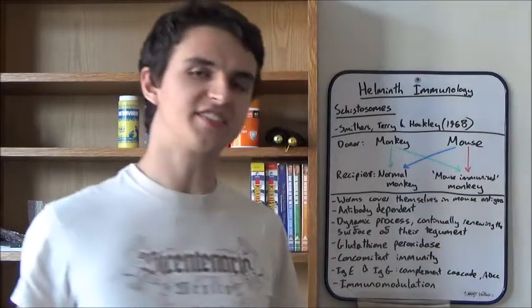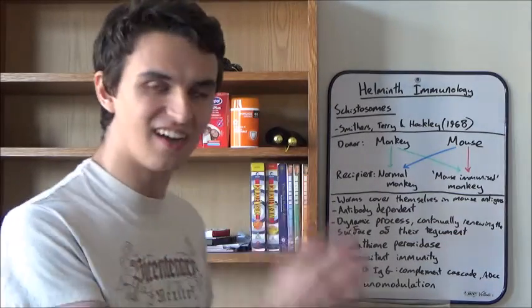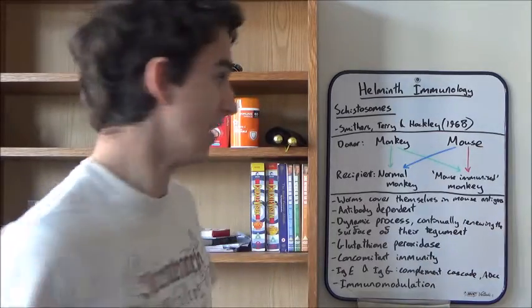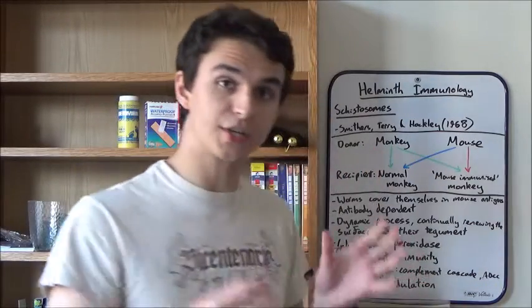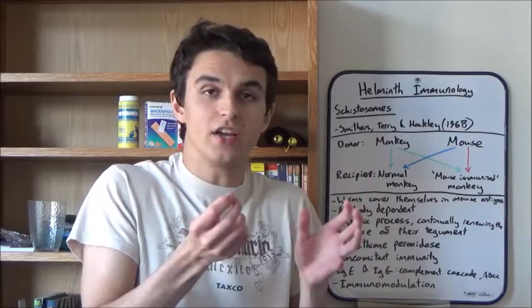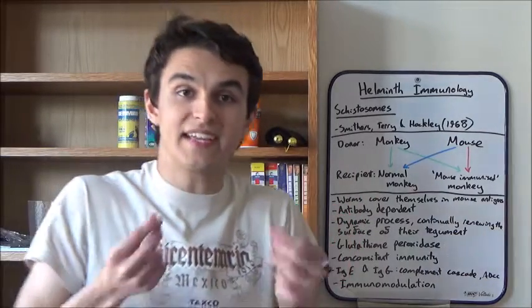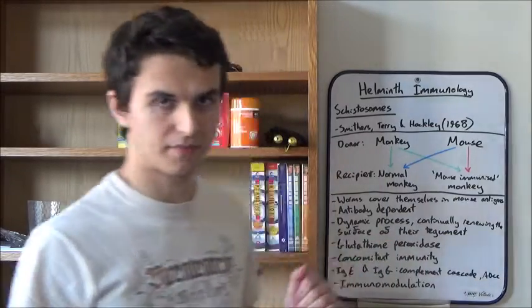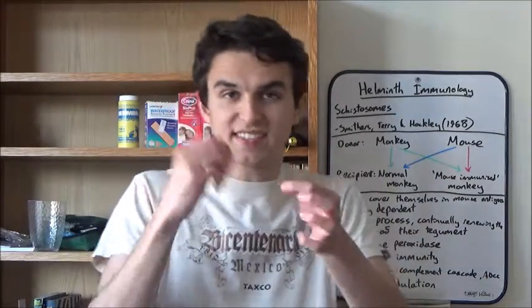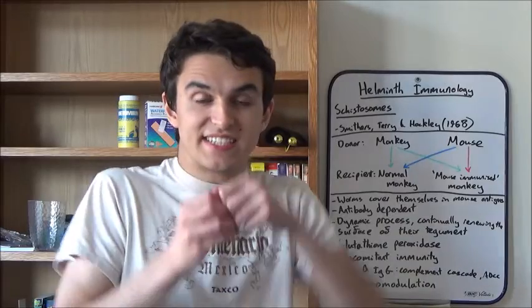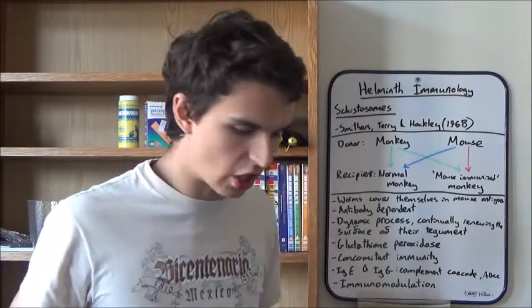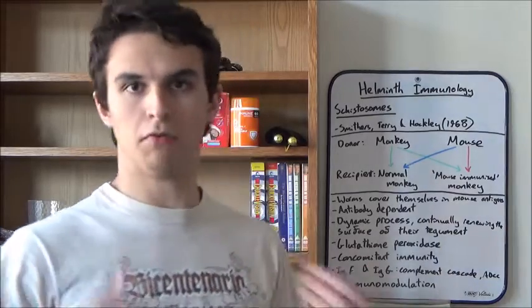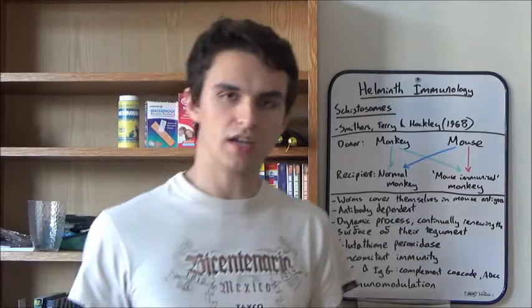We're going to start off by looking at the schistosomes. These are digenium parasites. I think we've covered them before in the first video. And they're particularly interesting because they normally rely on a snail to be an intermediate host. And the most famous types are the schistosomes. What happens there is the sporocyst inside the snail begins to release cercariae into the water column, which is picked up by a vertebrate host. For example, me, if I'm not too careful.